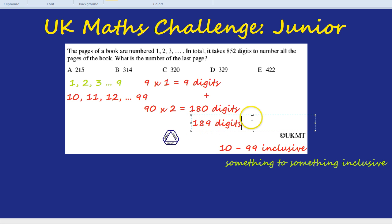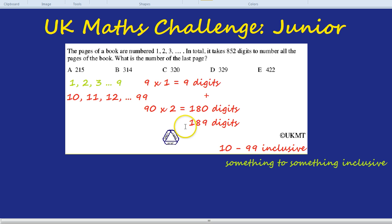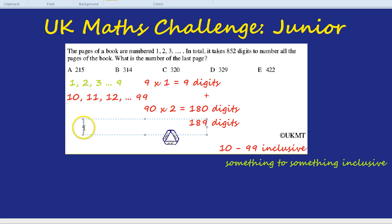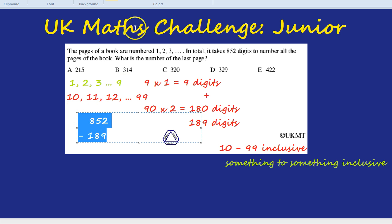But there are 852 digits in the entire book, so what we're going to have to do is look at the 3-digit numbers. It's not going to be more than 999 pages, so we don't need to focus on the 4-digit numbers — it's just going to be 3-digit numbers from now on. How many digits have we got left to play with? We've used up 189 for our single and 2-digit numbers, and we're told there are 852 in total. So if we take them away — 852 take away 189 — we'll find out how many digits there are in all the 3-digit numbers.